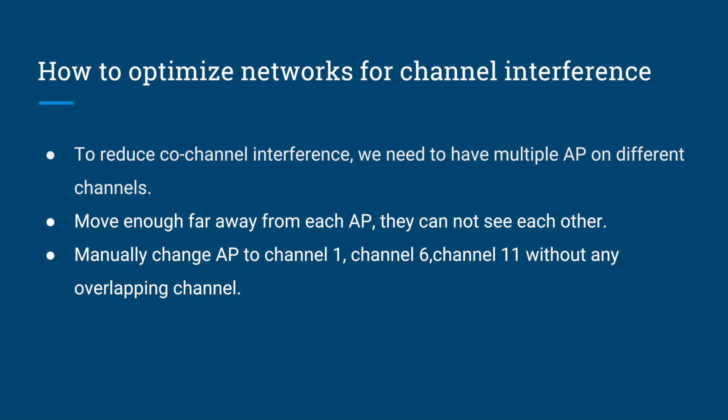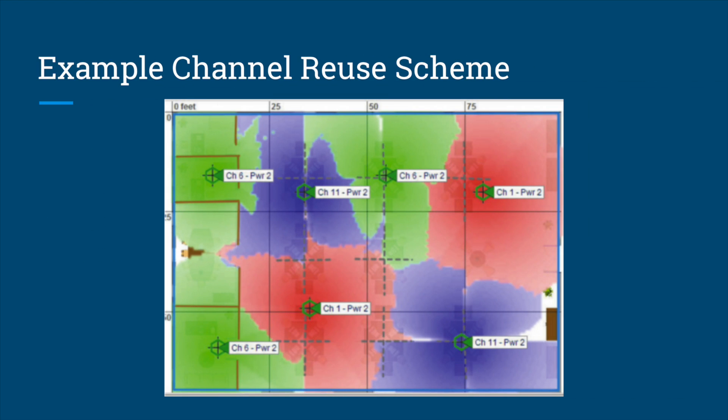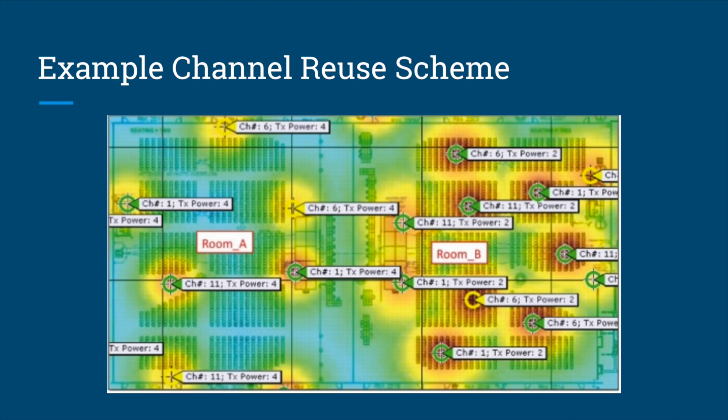As stated before, considering that advanced technology device usage has increased, it is important for us to reduce channel interference in our network. After our tests, we highly suggest that users change to non-overlapping channels in the 2.4 GHz band, which are channels 1, 6, and 11. Additionally, spacing out each AP from one another is another way to avoid channel interference.